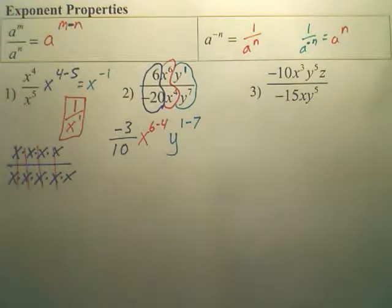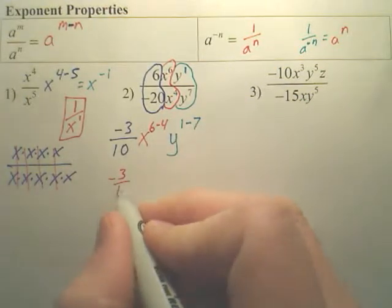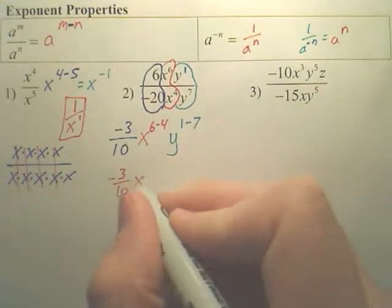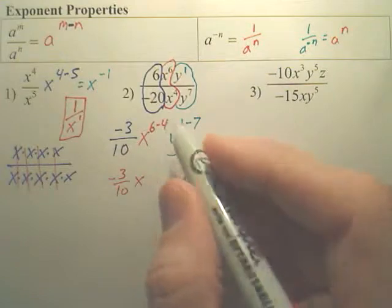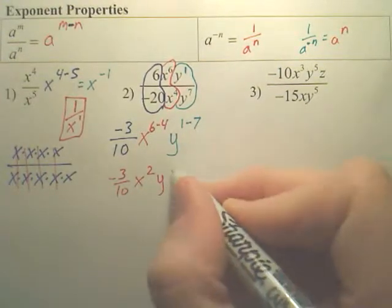Again, I'm showing all my steps. So my answer becomes negative 3 over 10. This becomes x to the 6 minus 4 is 2. This becomes y to the 1 minus 7 is negative 6.